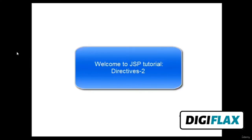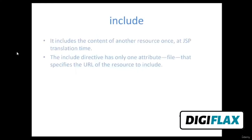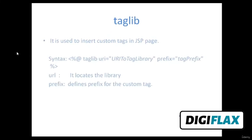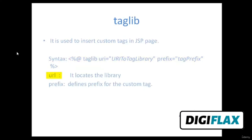In this tutorial, we are going to learn more directives in JSP. The include directive includes the content of another resource once at JSP translation time. It has only one attribute, file, which specifies the URL of the resource to include. The tag library directive is used to insert custom tags in a JSP page. The URL attribute locates the library, and the prefix attribute defines the prefix for the custom tag.